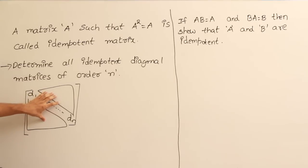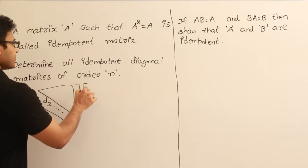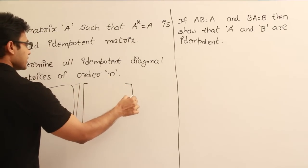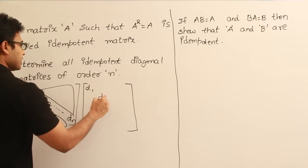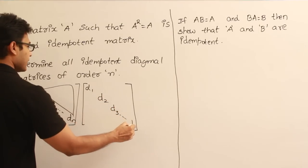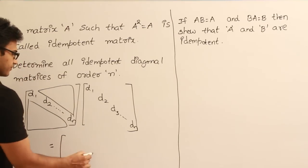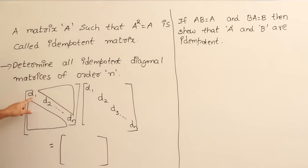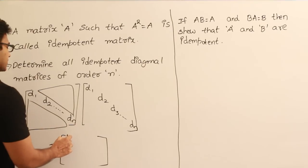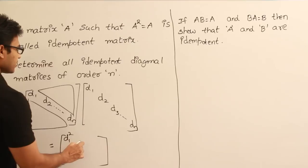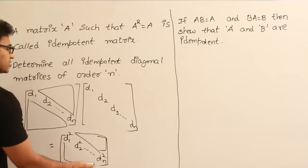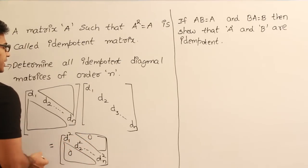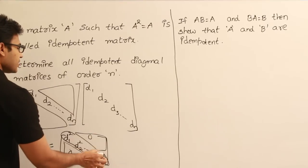Now if this diagonal matrix also has to be an idempotent matrix, I have to take the same matrix, multiply it with itself, and the result has to be the same. If I multiply the matrix with itself, the diagonal elements become D1 squared, D2 squared, so on, Dn squared, and all elements above and below the diagonal remain zeros. This is the principal diagonal result we get.